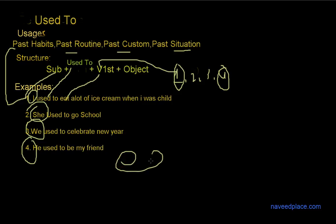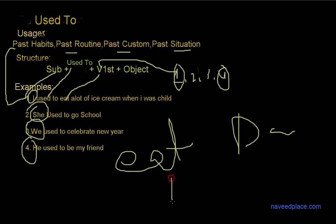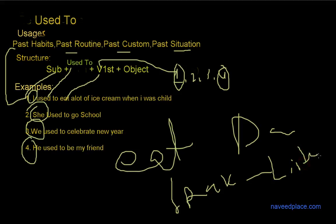And what is a verb? A verb is a word used to indicate an action. For example: dance, speak, listen, talk — all these words define an action. So any word that defines an act is called a verb. In our examples, we have: eat, go, celebrate, and be.